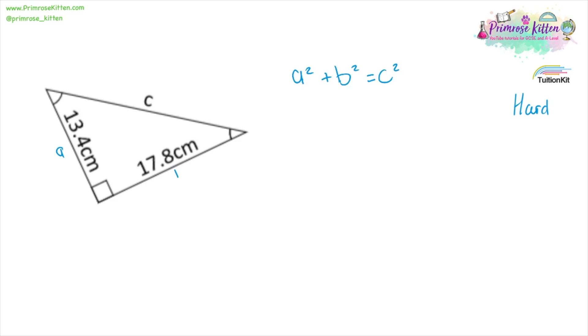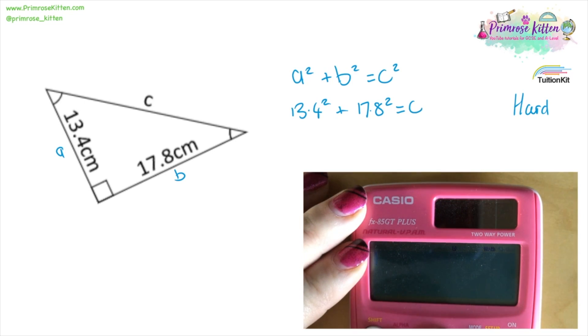A and B. So 13.4 squared plus 17.8 squared equals C squared. Straight into your calculator, 496.4 equals C squared. Square root of that is going to give us 22.3.